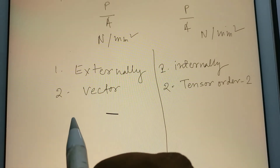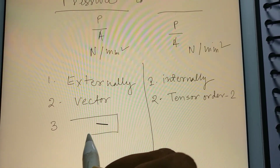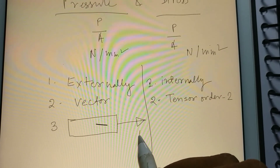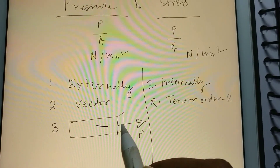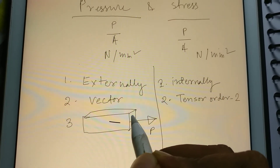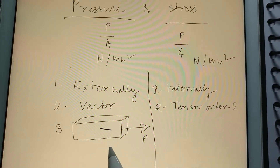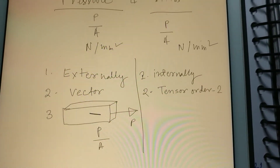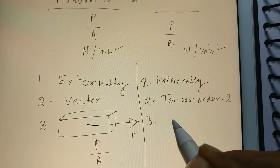Now I draw the diagram. Suppose this is a body and we apply force P. This is the cross-section area of that particular body — let this be A. The force acting perpendicular to the surface is called pressure, P by A, which is externally applied.